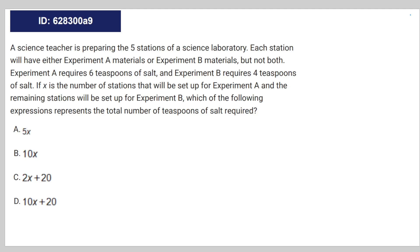Okay, so we have this algebra question. A science teacher is preparing five stations of a science laboratory. Each station will either have Experiment A materials or Experiment B materials, but not both.